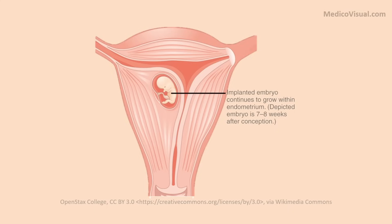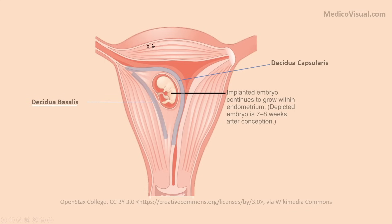At the end of the second week, the embryo is completely implanted into the decidua of the endometrium. Topographically we can divide the decidua into three types: the decidua capsularis, which is the capsule-like decidua overlying the implanted conceptus; the decidua basalis, which is the basal plate-like decidua underlying the conceptus; and the decidua parietalis, which is all the remaining decidua not involved in the process. Please note that the decidua basalis is the only part of decidua that contributes towards the formation of the maternal part of placenta.